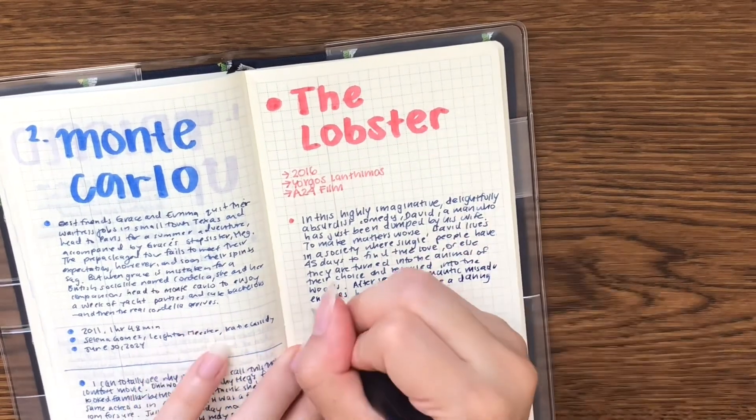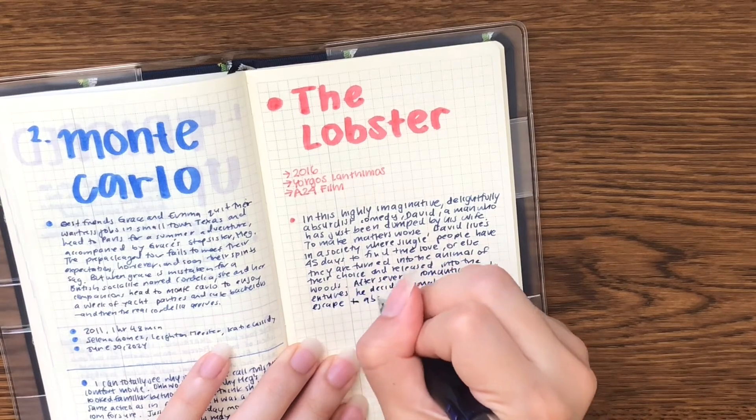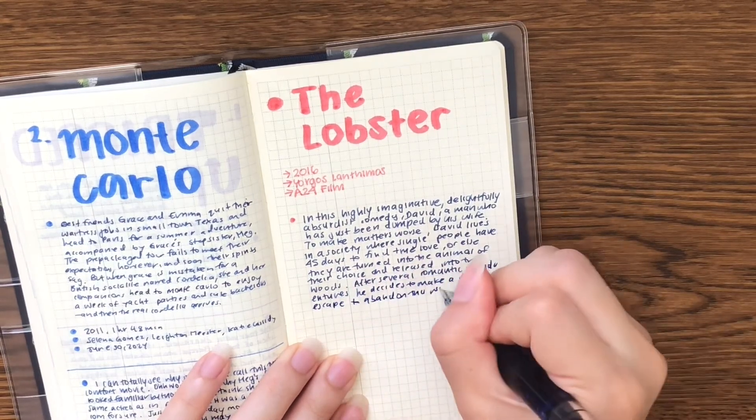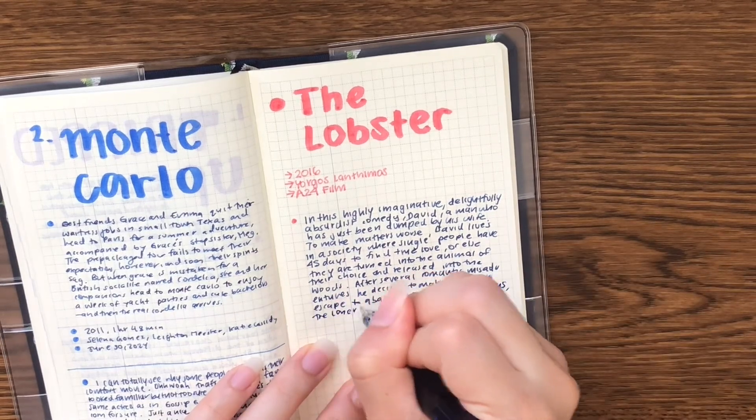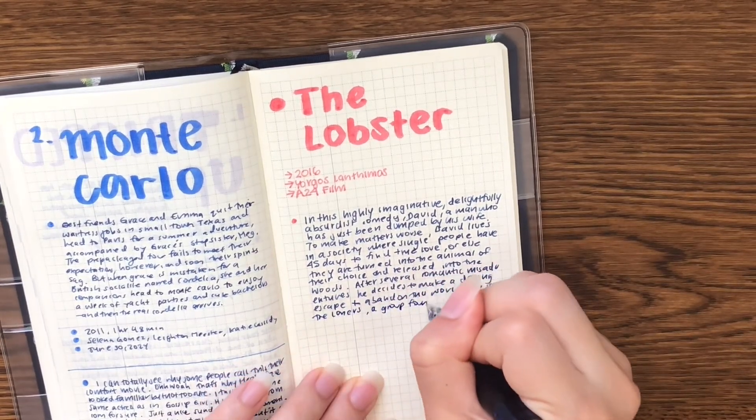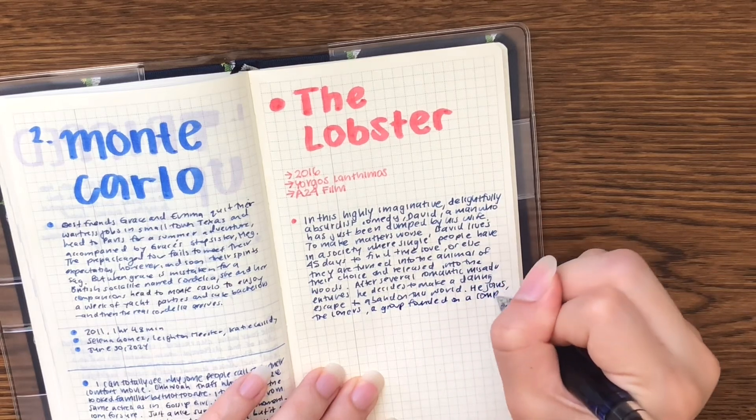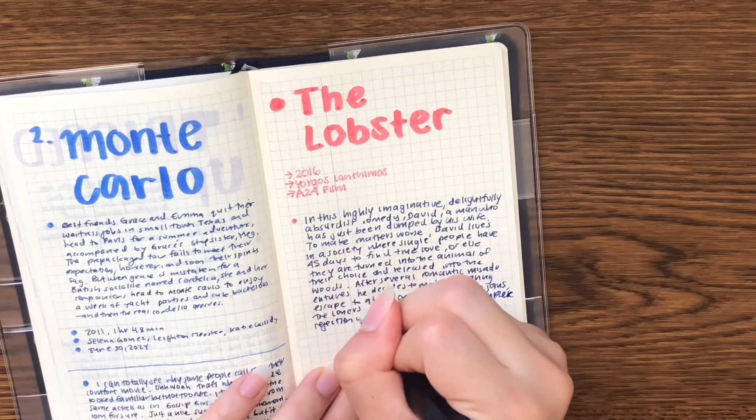Then I'll write a bit of a summary based off what I find on Google, and then I'll also write how I felt about it, give a little rating, any quotes I liked, and just whatever I want to write about it. Usually I'll limit myself to one page for the movies I've been watching lately, but in the past I have gone over two pages.